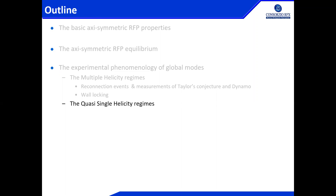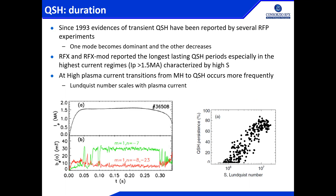So we were at the quasi-single helicity. By the way, helicity is an unfortunate word which is not the same helicity as the helicity in Taylor. They are using the same word, but in this case helicity means the M and N of the mode. Sometimes it gets some confusion, but this is why we call them helicity, quasi-single helicity.